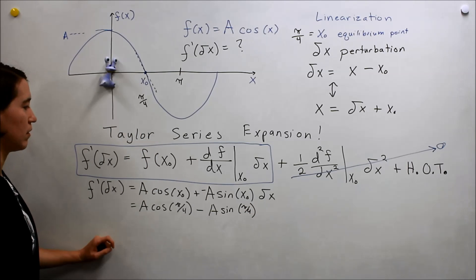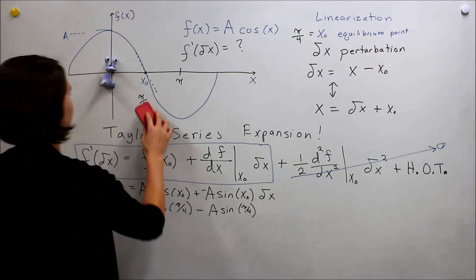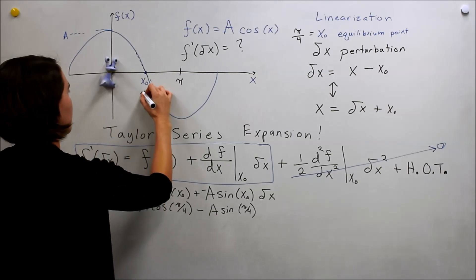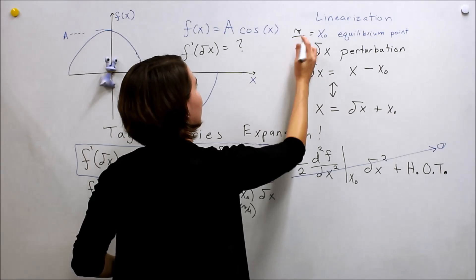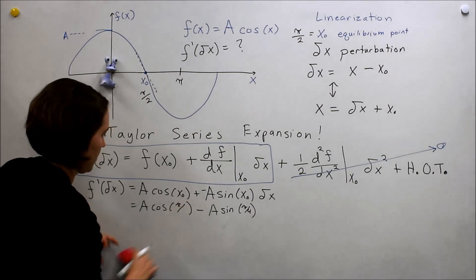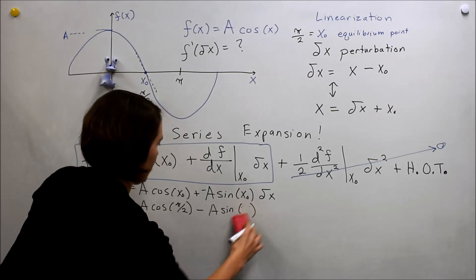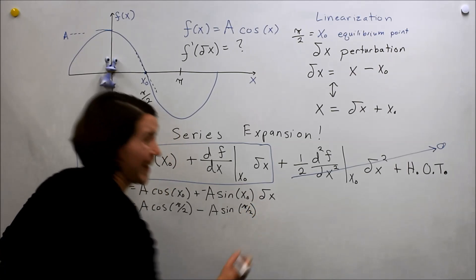What am I doing? Oh, it should be π over 2. It should be π over 2. It should be π over 2. Okay.